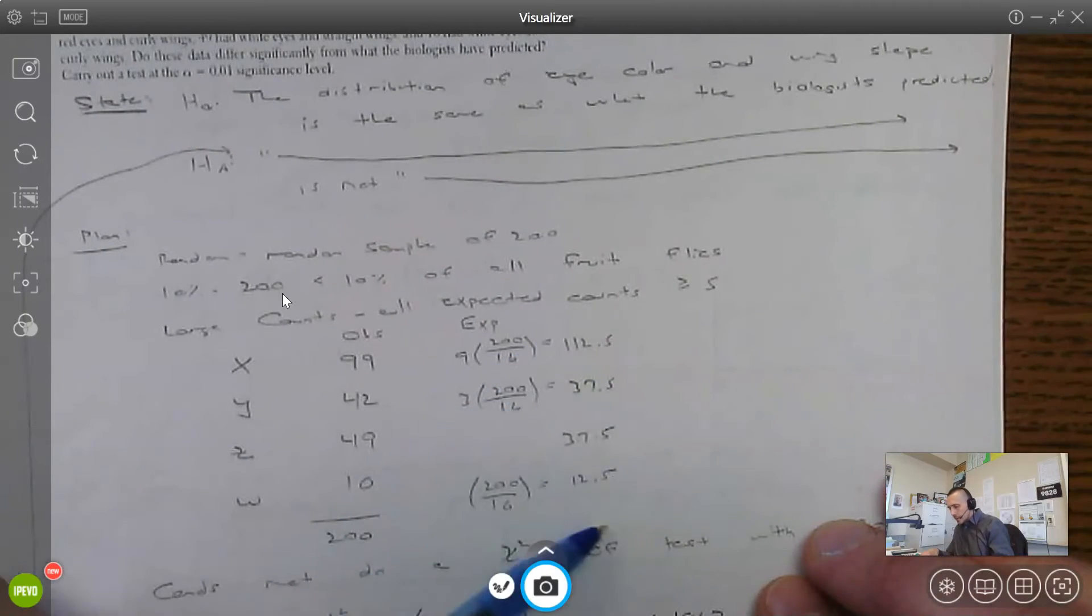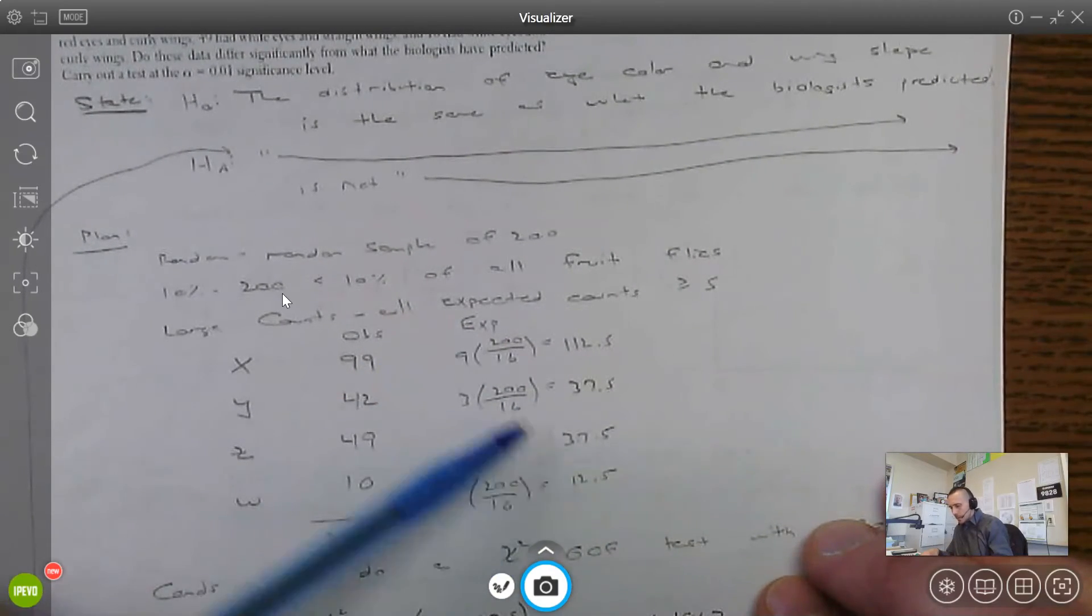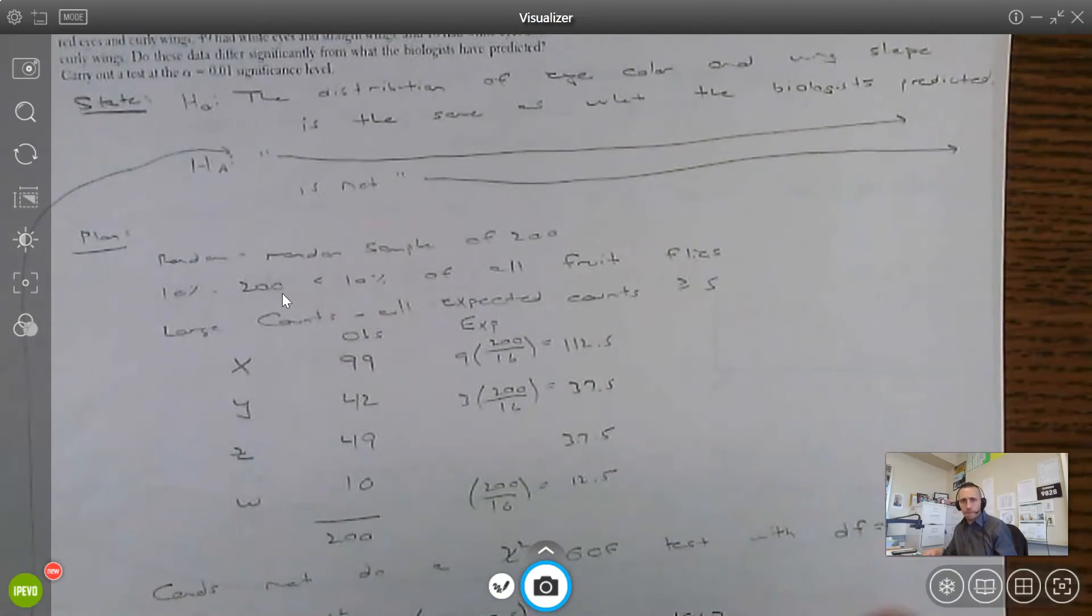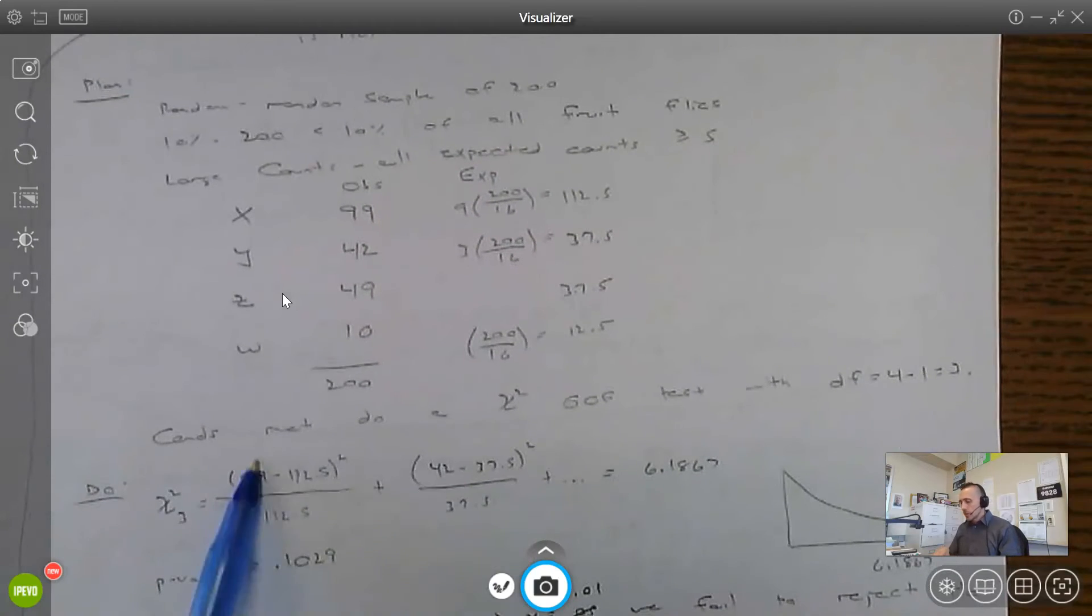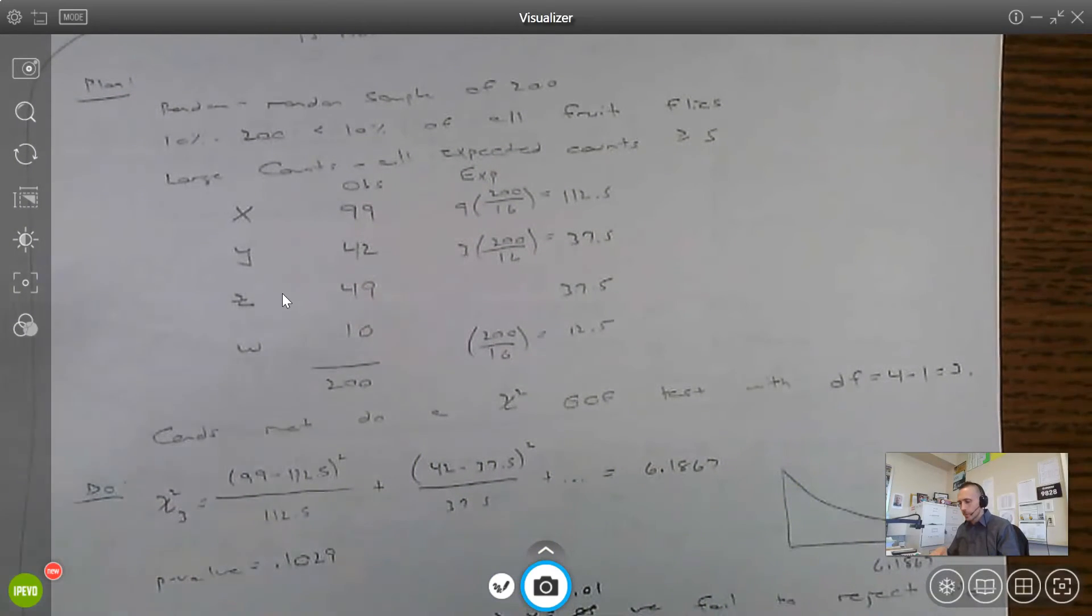So these four expected values, make sure you explicitly state these are expected because all expected counts are at least five. Your AP reader needs to know which ones you're talking about. So conditions are met. We're going to do a chi squared goodness of fit test with three degrees of freedom. We have four different genetic traits, minus one. So four categories minus the one.